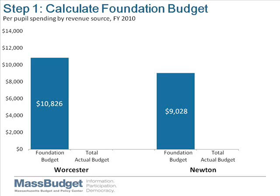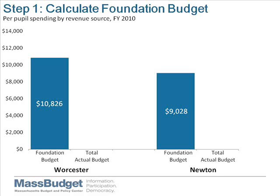Step 1: calculate the foundation budget. The foundation budget is a calculation of how much it should cost to provide an adequate education for the specific kids in a given school district, and it is often expressed as a per-pupil number by dividing the total foundation budget amount by the number of students in the district, as we do in these graphs. The foundation budget is calculated by looking at the specific number of students at every grade level and demographic group — for example, low-income students or limited English proficient students — and multiplying those numbers by a set of education cost categories, such as professional development, teacher salaries, and building maintenance. In this case, Worcester has a higher per-pupil foundation budget than does Newton, mostly because it has more limited English proficient students and low-income students.